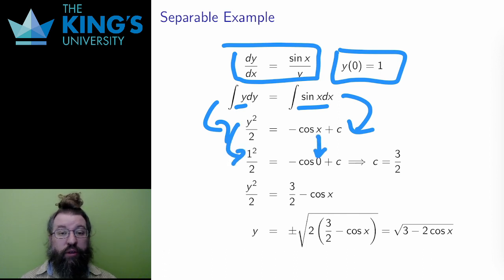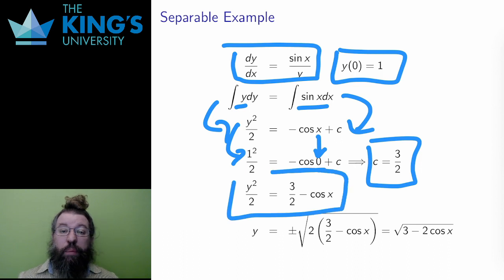If x = 0, then y = 1 according to the initial condition. I put those values in and solve for c. I get 1/2 on the left and -1 + c on the right, since cos(0) = 1. Adding 1 to both sides lets me conclude that c = 3/2. That's the value of the constant of integration. So now I put that in for c and try and finish solving for y.